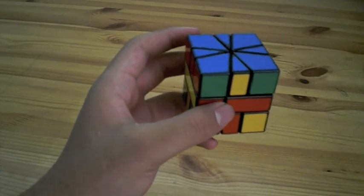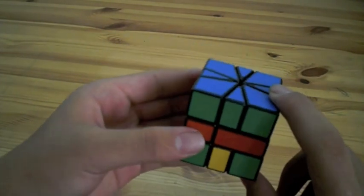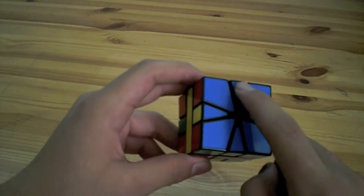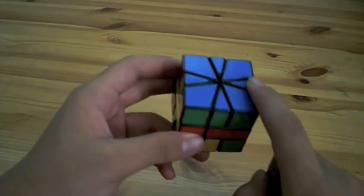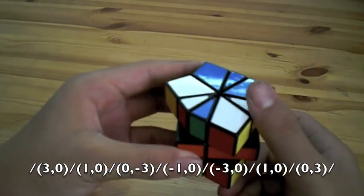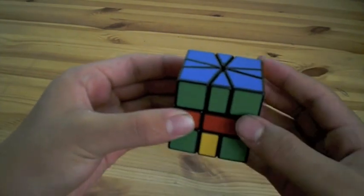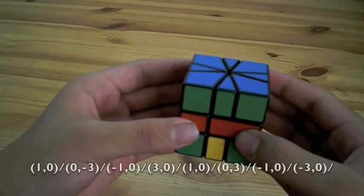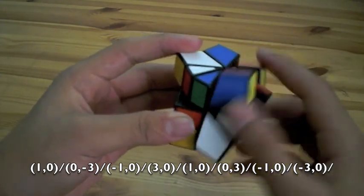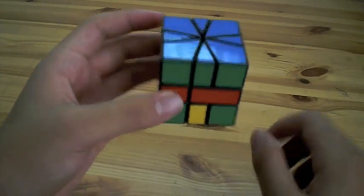The next step of solving the Square-1 is to permute all of the edges within their layer. So we are going to do this in two steps using cycles of three pieces, unless we have parity, which I will explain later. Now first the algorithms. We have the clockwise cycle of these three edges. And then we have the counterclockwise cycle, and that is basically just the other algorithm backwards.